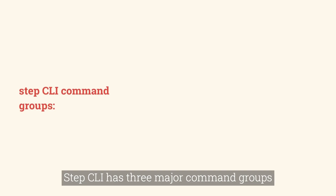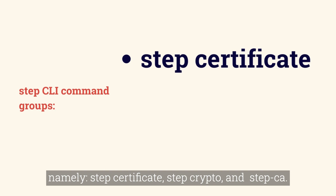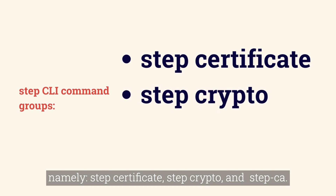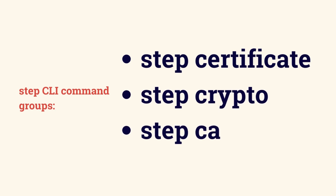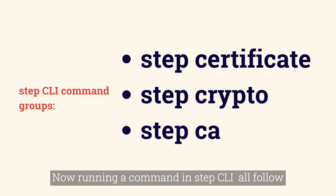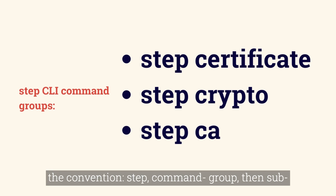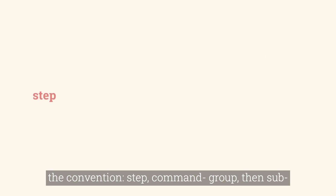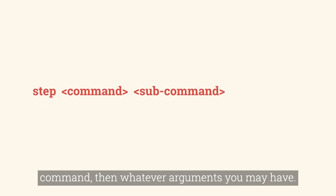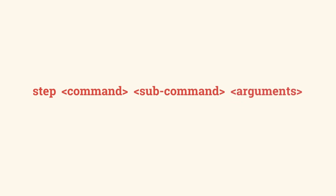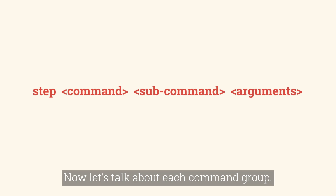Step CLI has three major command groups: step certificate, step crypto, and step CA. Running a command in Step CLI follows the convention of the command group, then a subcommand, then whatever arguments you may have. Let's talk about each command group.